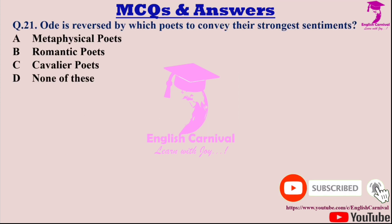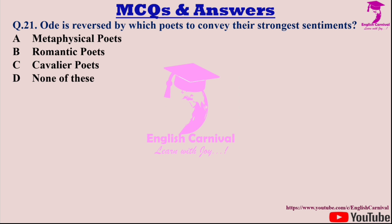Question twenty-one: The ode is reserved by which poets to convey their strongest sentiments? Options are A: Metaphysical poets; B: Romantic poets; C: Cavalier poets; and D: None of these. Correct answer is B — Romantic poets.